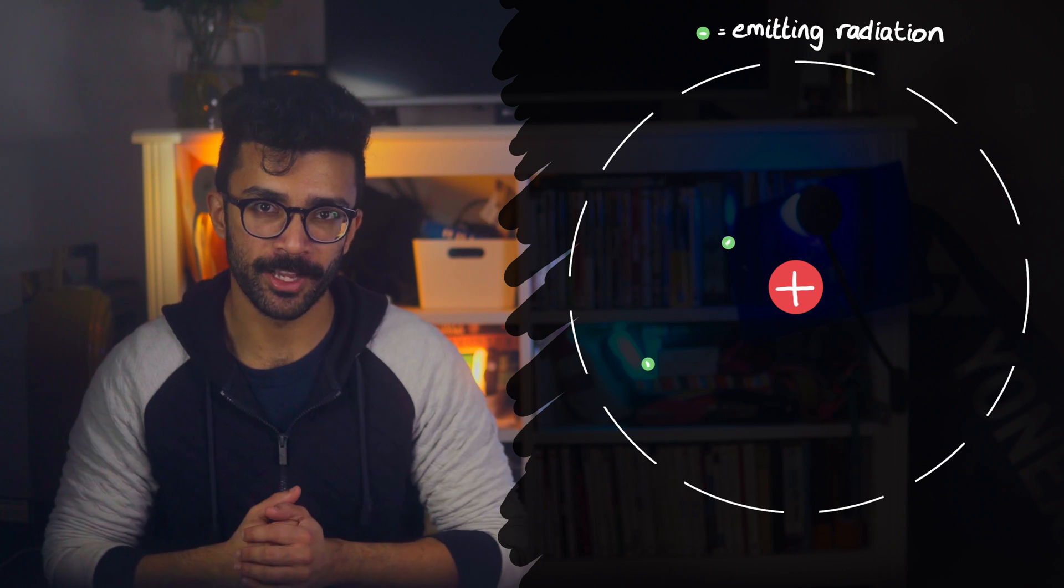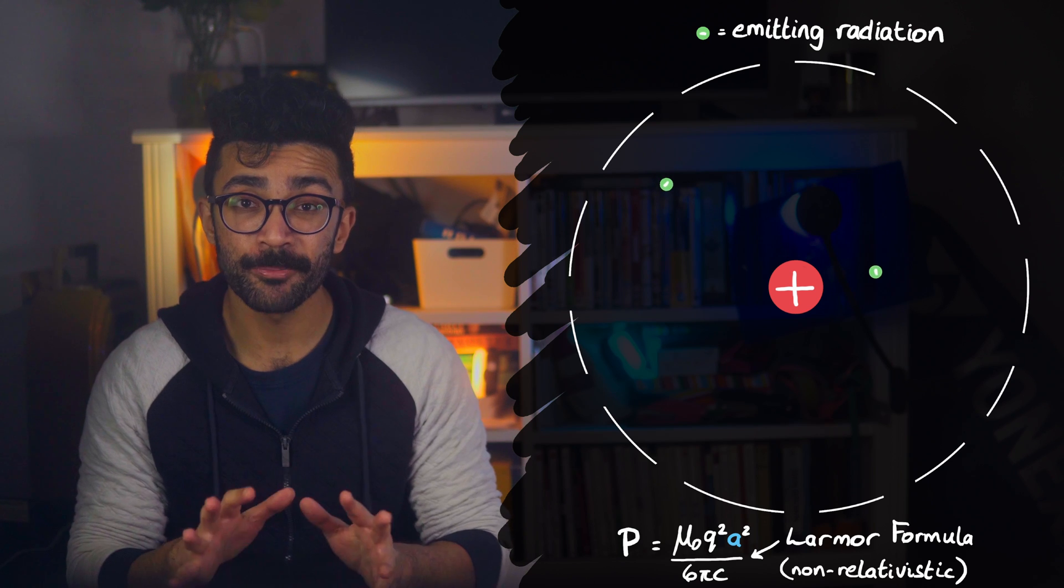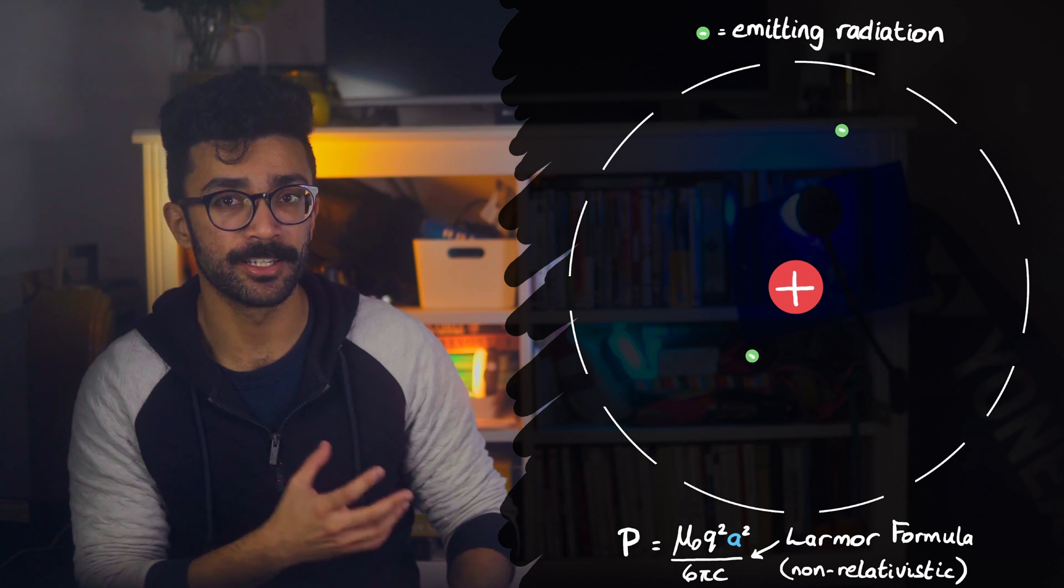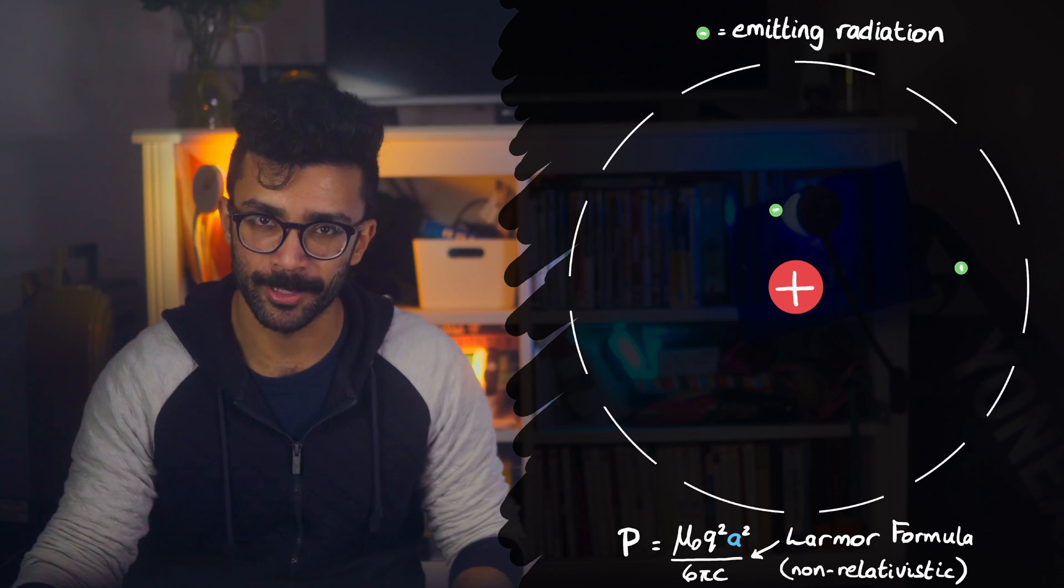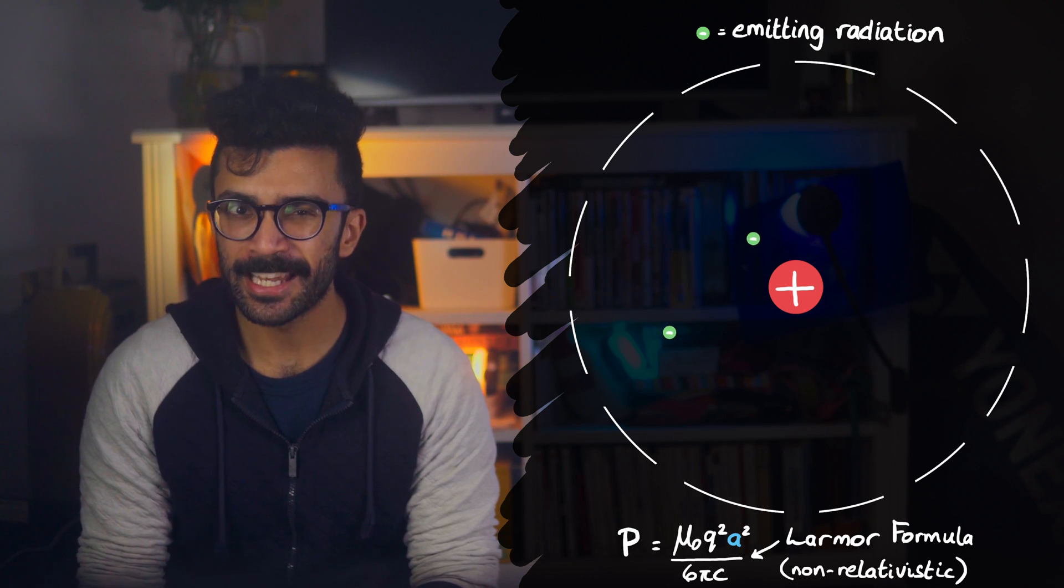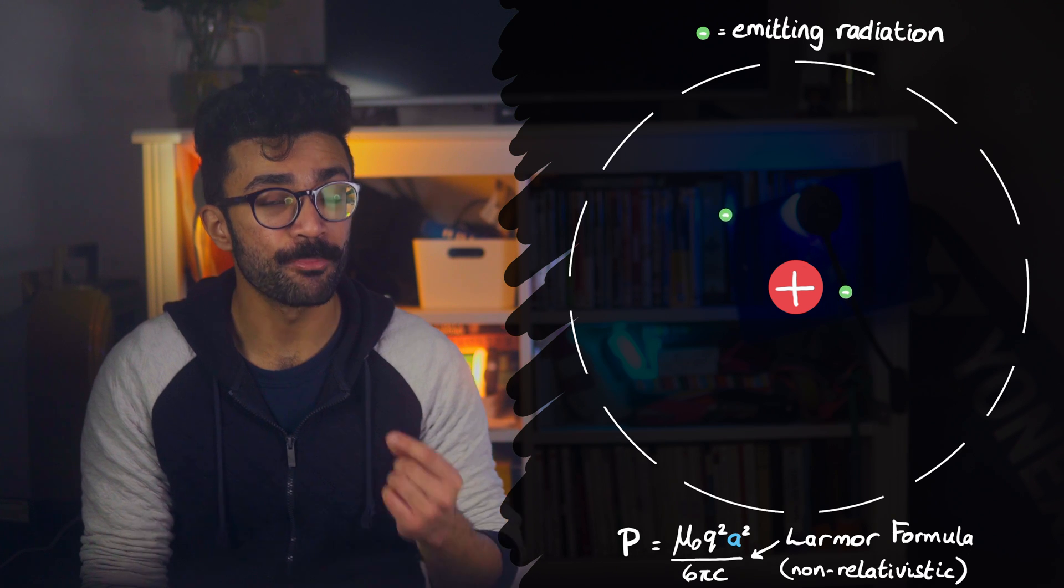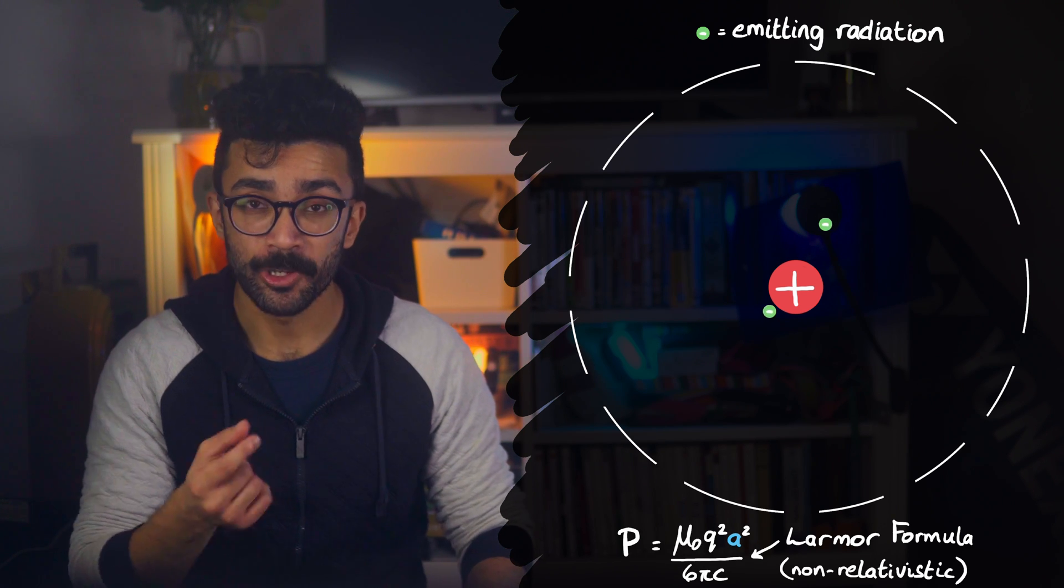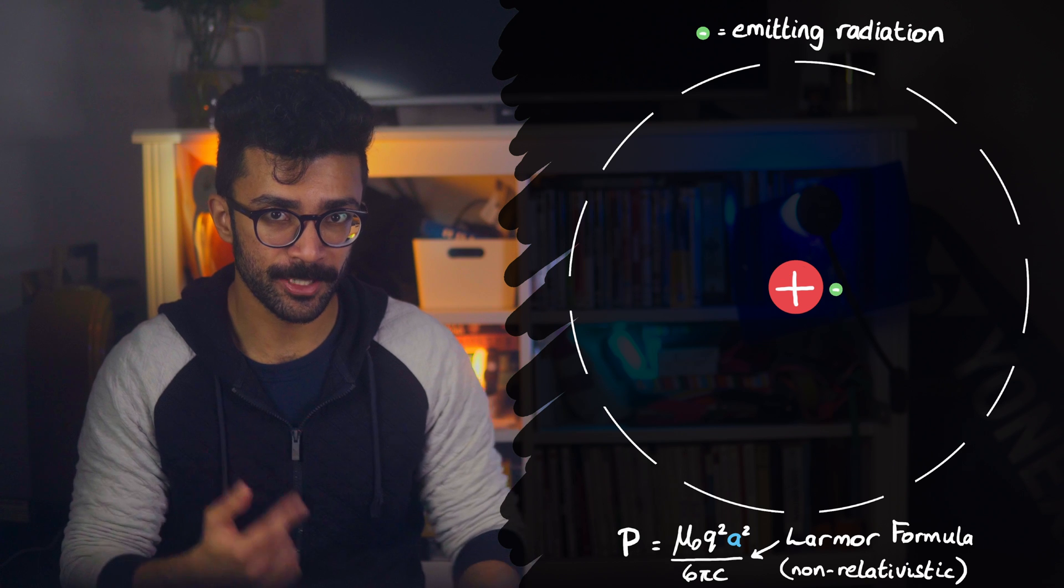This is given by the Larmor formula. Looks complicated, but it just gives us the power emitted, energy per unit time, by a given charge accelerating at a given rate. What this implies is that electrons that orbit a nucleus must in fact emit radiation, lose energy, and spiral inwards.